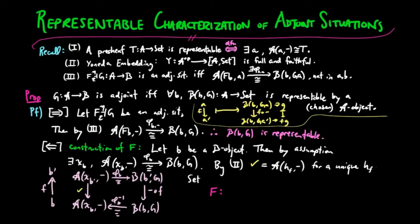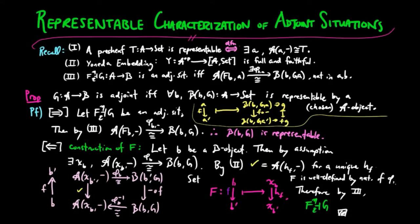So we can now set the functor F to take a B morphism F to HF. The preservation of composition and identity morphisms comes from the UNEDA embedding again, and this makes phi B a natural isomorphism. Therefore, FG is in adjoint situation, and that completes the proof.